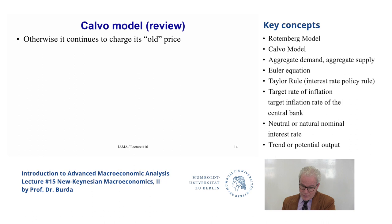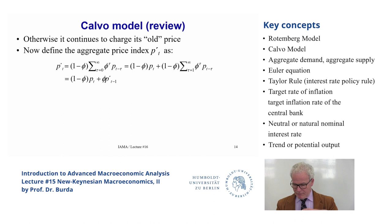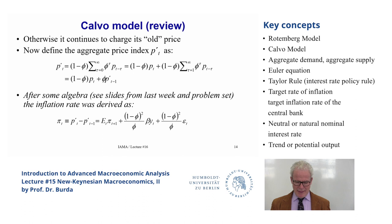Otherwise, the firm is stuck — if you can't change your price, you charge the old price and make more or less money than you would have if you had the privilege of changing it. The aggregate price level consists of a weighted average of those prices that are changed today and those that are not. From last time, doing some algebra, you can derive the New Keynesian Phillips curve, which depends on the expected future price level, aggregate demand sensitivity, and a shock term.